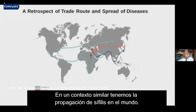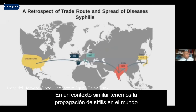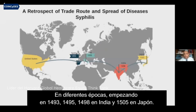In a similar context, we have the spread of syphilis across the world in different time frames: 1493, 1495, 1498 in India, and 1505 in Japan.